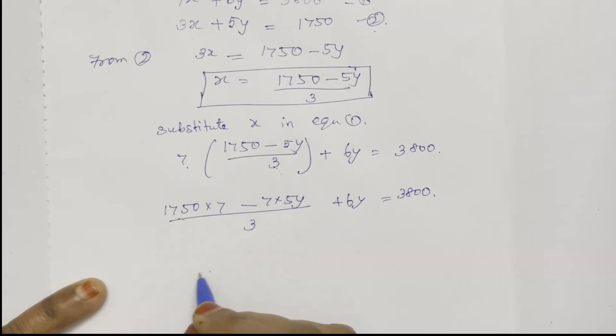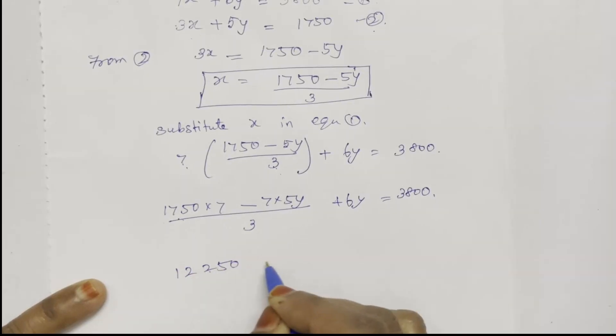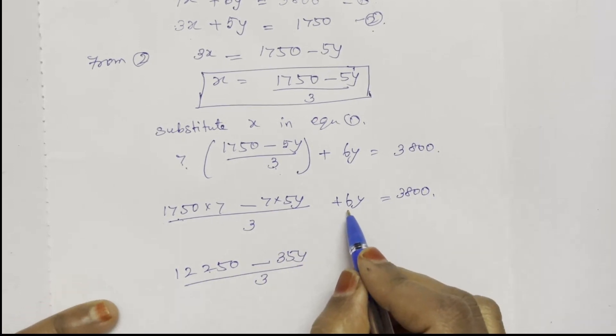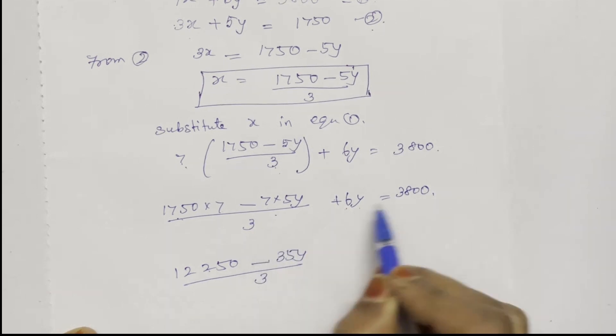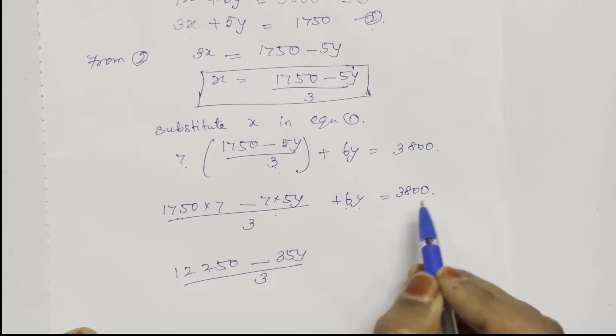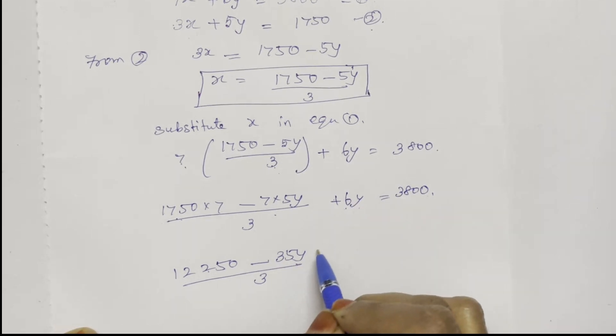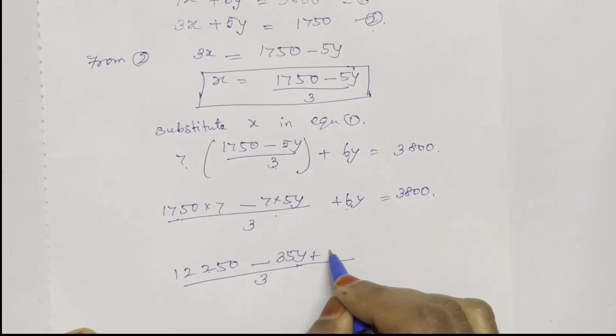Multiplying gives 35Y divided by 3, plus 6Y. Group these terms together and move the 3 to the right side. The LCD of 6 and 3 is 18.